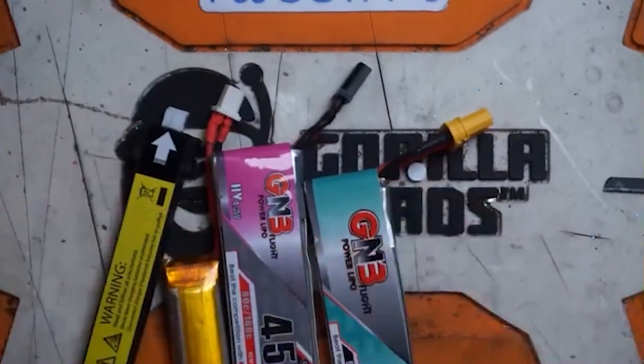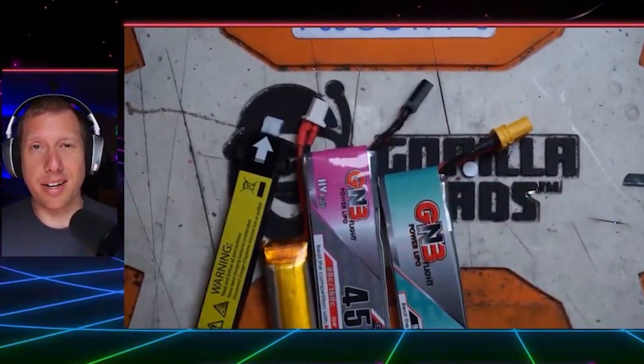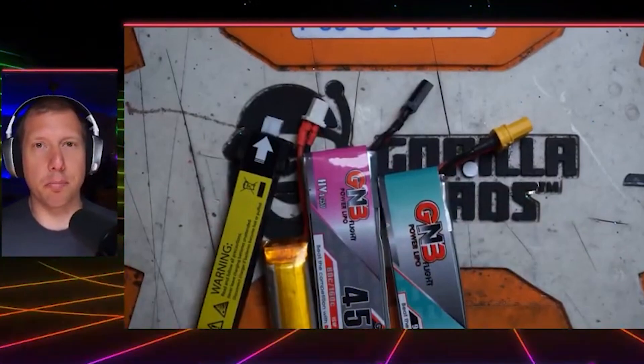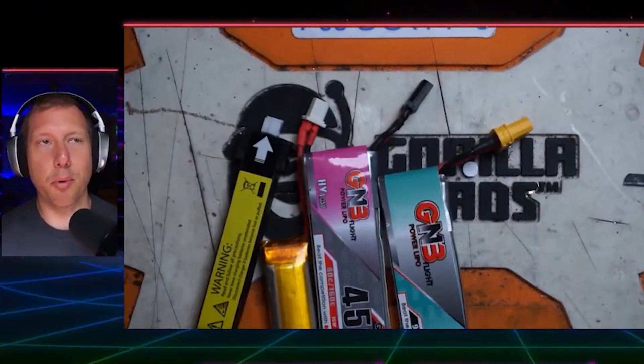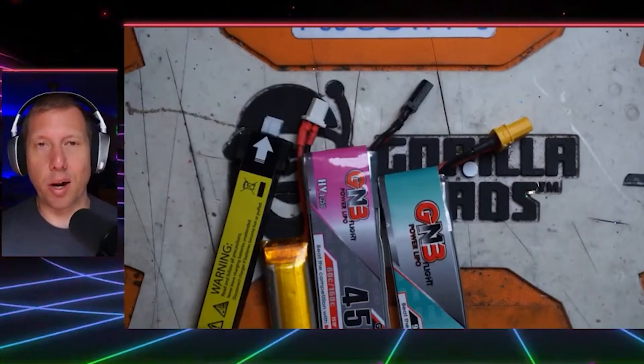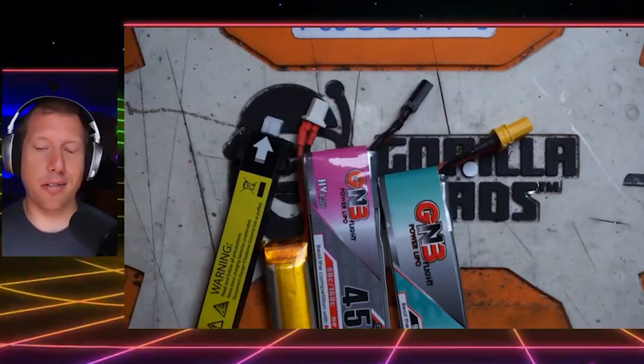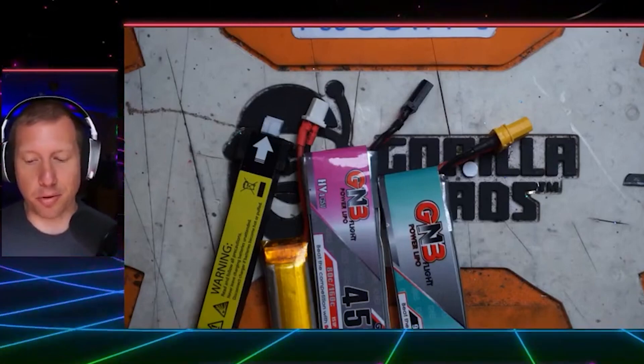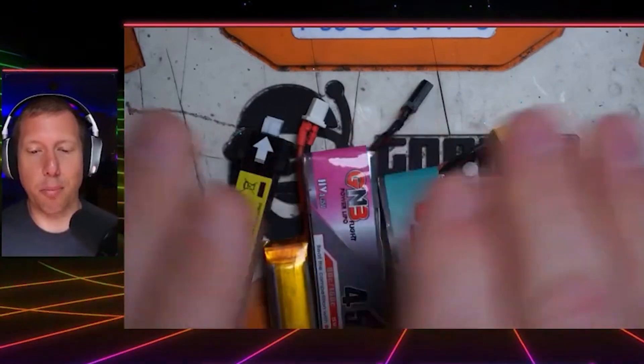That's kind of the rundown of the basic connectors that people are using for 1S. Like I said, there are a few other outliers—there's micro losi, there's PH 1.7, there's also like a JST, a little red connector—but those are kind of gone the way of the dodo. People don't really use those anymore, but these are the four major ones you're going to see out there.